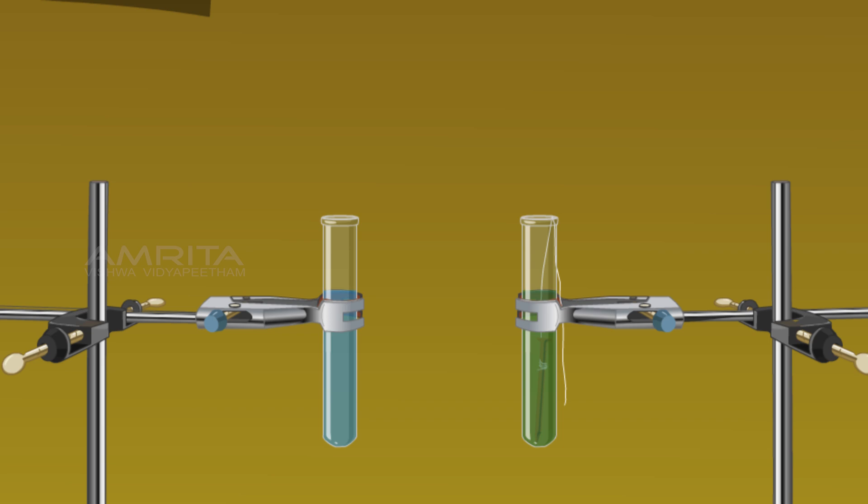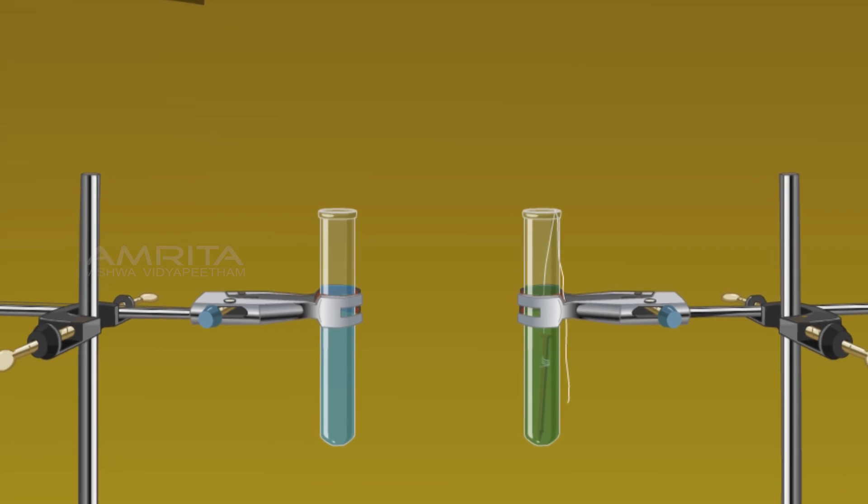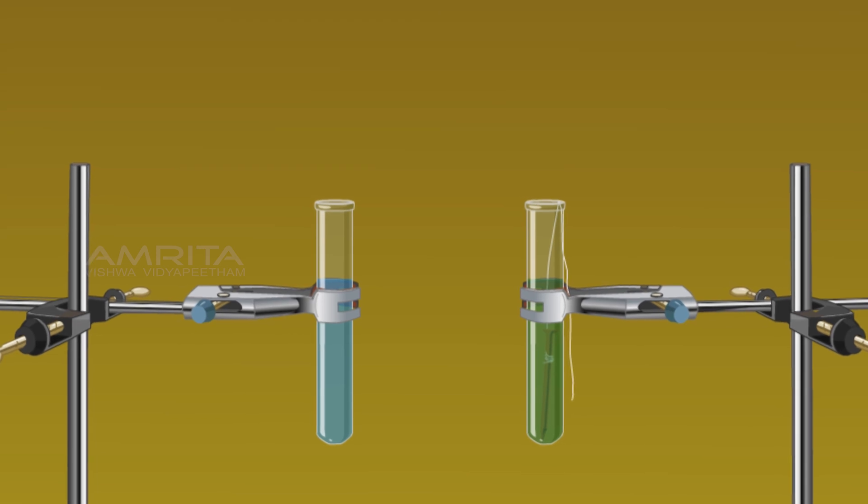After 15 minutes, the colour of the copper sulphate solution containing the iron nail turns light greenish colour. Whereas the colour of the solution in the other test tube does not change.